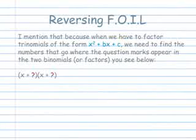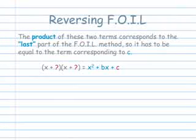I mention that because when we have to factor trinomials of the form x squared plus bx plus c, we need to find the numbers that go where the question marks appear in the two binomials or factors you see below. The product of these two terms corresponds to the last part of the FOIL method, so it has to be equal to the term corresponding to c.